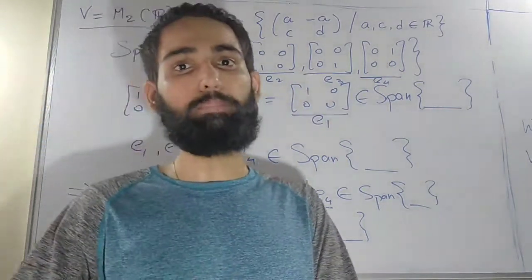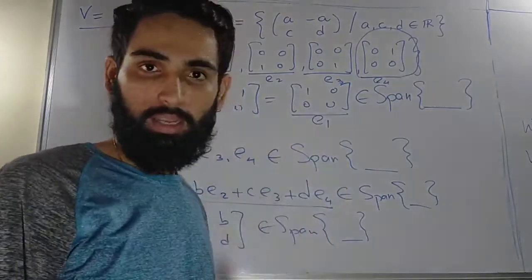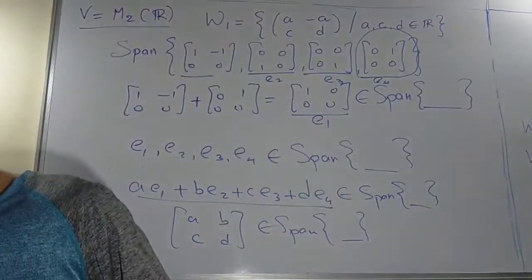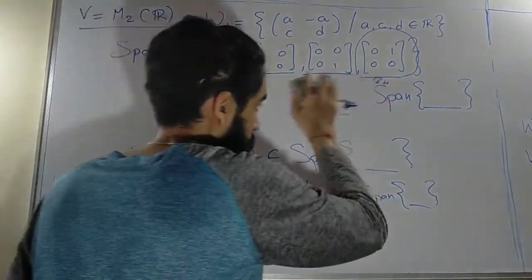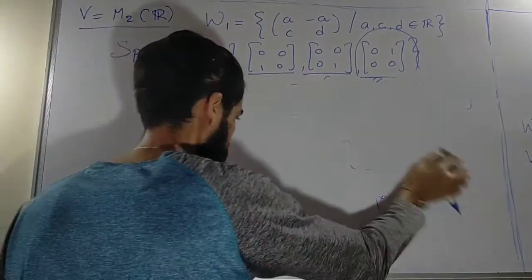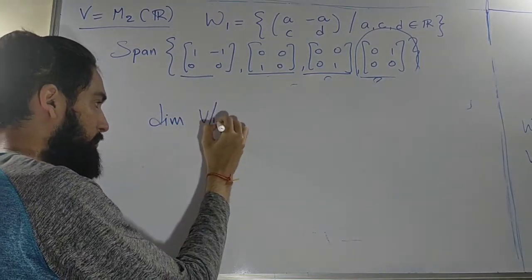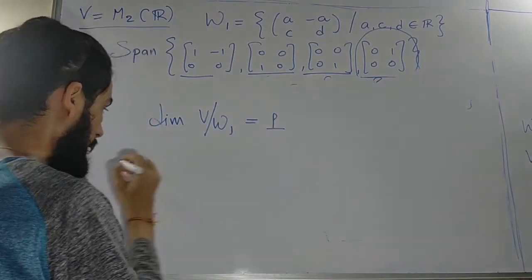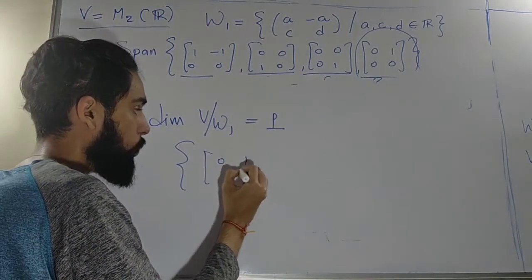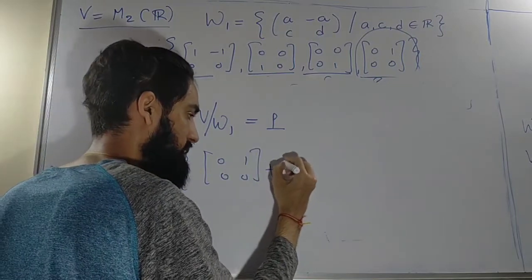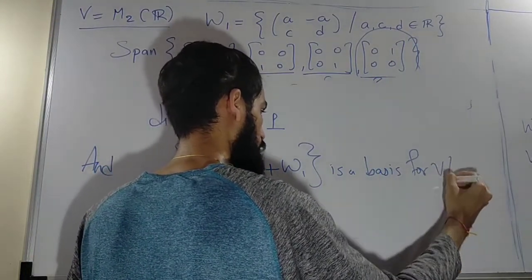Since we started with the basis of W1 and extended it to a basis of V by introducing one element, that extra element gives us the basis for the quotient space. The dimension of V/W1 is 1, and the basis for V/W1 is the single coset {(0,1;0,0) + W1}.